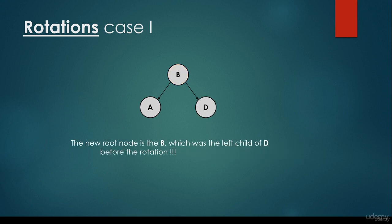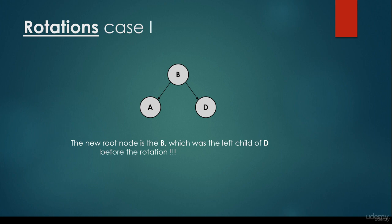After the right rotation, the left child of the root node is going to be the new root node, so the new root node is node B, and the right child of B is going to be the previous root node, which is node D. This is how we make a right rotation on node D. This is case 1, the so-called doubly left-heavy situation — we just have to make a single right rotation on the root node. It's very important that we are not done; we have to check whether this rotation causes other violations of the AVL property in other regions of the tree.